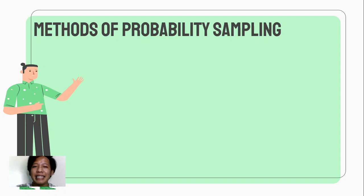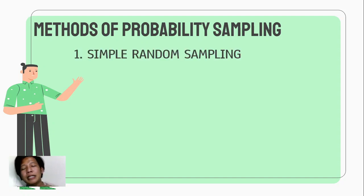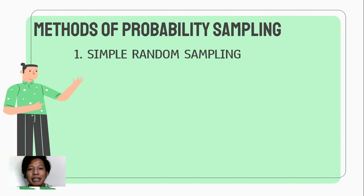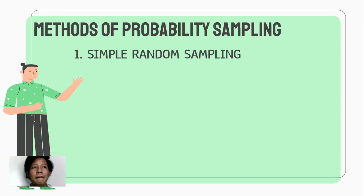So, what are the different methods of probability sampling? Dito, binibigyan natin ng chance ang lahat ng tao o bagay sa population na mapili bilang part ng sample. Number one is simple random sampling. Pag sinabi nating simple random, let's say for example I have 50 students as my population. Lahat ng pangalan nila ilalagay ko sa fishbowl, tapos bubunutin ko yung labinlimang study. Randomized po siya — pwede din tayo mag-generate ng random numbers using our calculators.